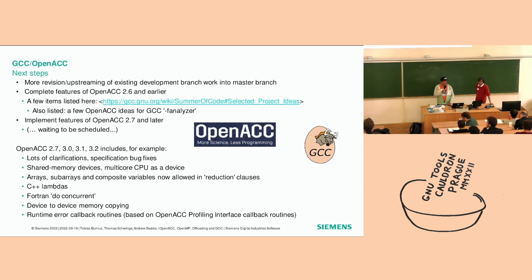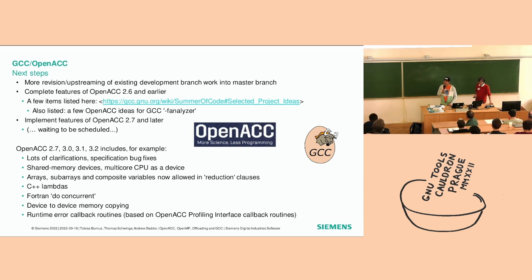We continuously try to upstream our development branch work into master branch, which always takes time and needs revisions. Next steps: more upstreaming, completing features still missing in OpenACC 2.6. We've implemented roughly 80% of OpenACC 2.6. The missing pieces are reasonably simple in many cases — things like runtime library calls to allocate memory or initialize devices that can also be done using directives. There are also ideas to use the GCC static analyzer on OpenACC code to check host versus device memory space distinctions, catching use-after-free and double-free errors.